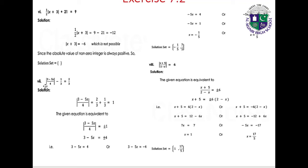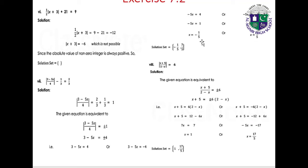Part 7: |3 minus 5x|/4 minus 1/3 equals 2/3. So |3 minus 5x|/4 equals 1, giving |3 minus 5x| equals 4. This is equivalent to 3 minus 5x equals 4 or 3 minus 5x equals minus 4. First gives x equals minus 1/5. Second gives minus 5x equals minus 7, so x equals 7/5. Solution set: {-1/5, 7/5}.